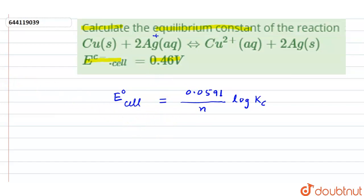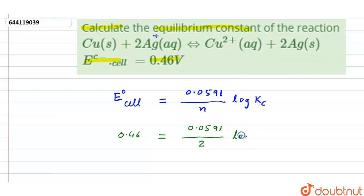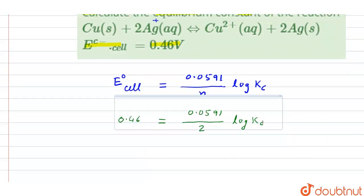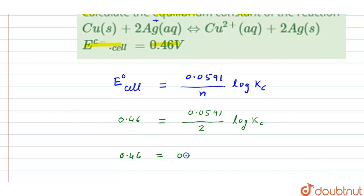Now putting the values: the value of E°cell is 0.46 volt, so this is 0.46 = (0.0591 / 2) × log Kc, meaning two moles of electrons are involved in this cell reaction. Upon solving, we get: 0.46 = 0.02955 × log Kc.